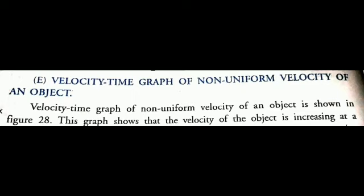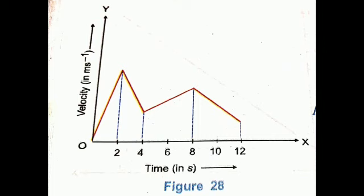Moving ahead, let us consider the velocity-time graph of non-uniform velocity of an object. Observe figure 28 carefully. This graph shows that the velocity of the object increases at a constant rate up to 2 seconds, then decreases at a constant rate up to 4 seconds, then increases again up to 8 seconds, and then decreases again up to 12 seconds. This is the graph of non-uniform velocity of an object.